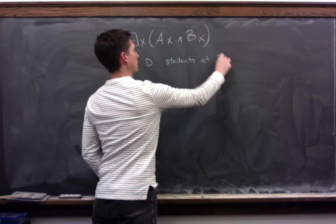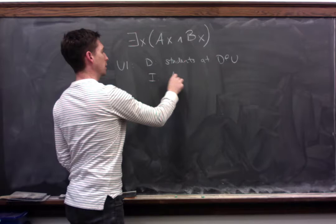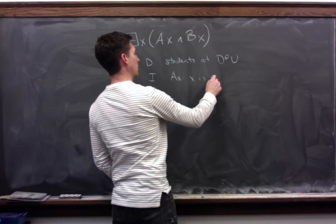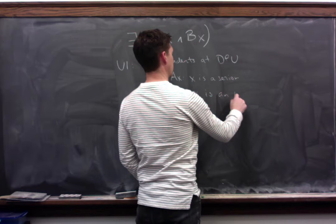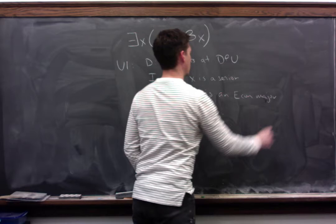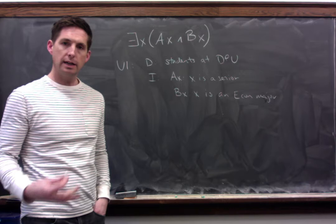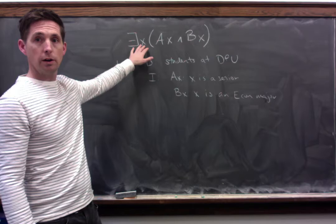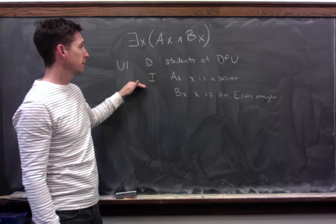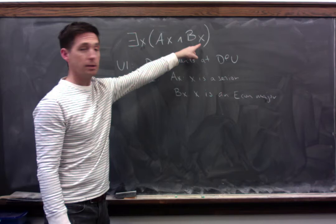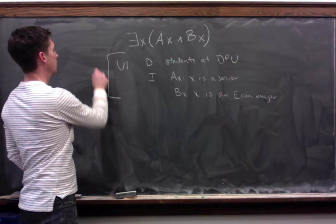Let's first consider Universe 1, where the domain is the students at DePauw, and the interpretation is: Ax refers to the property of being a senior, and Bx refers to being an economics major. Given this domain and interpretation, is the formula true or false? The formula is true relative to this universe, because it says some students at DePauw are both seniors and economics majors — and that's true.